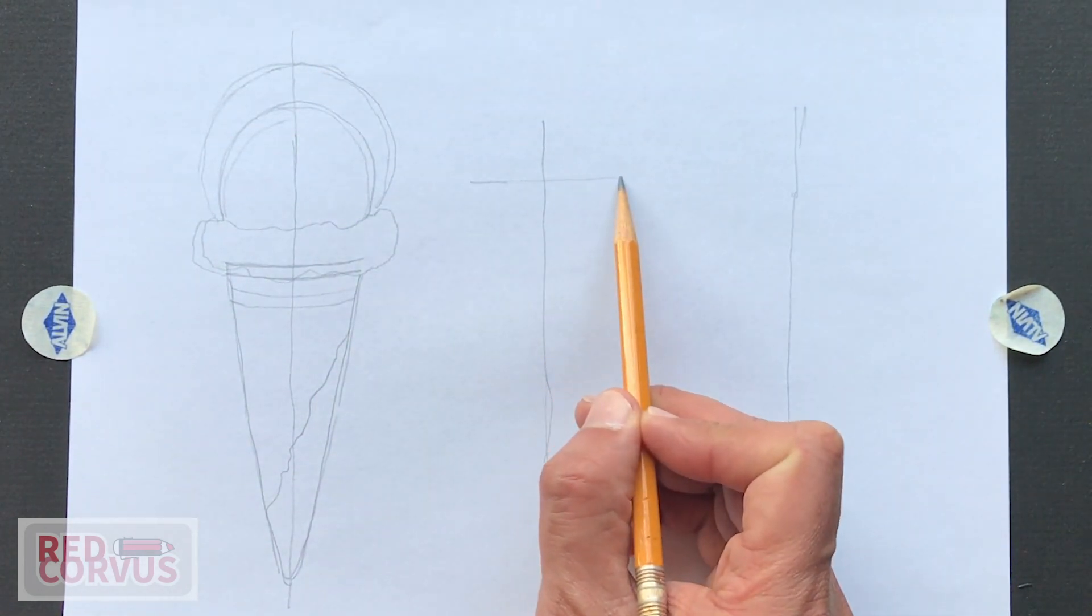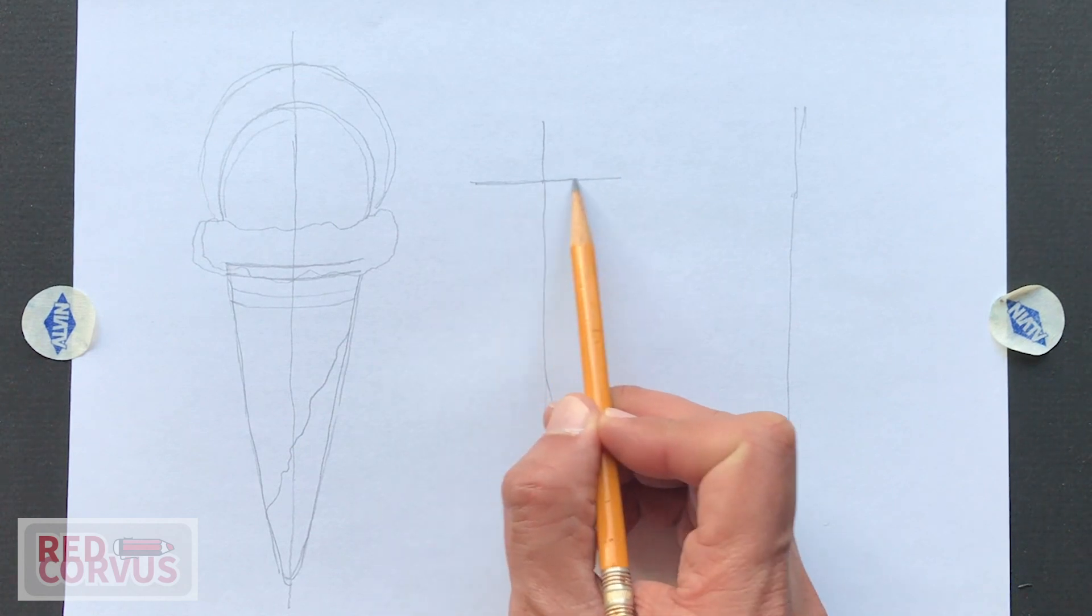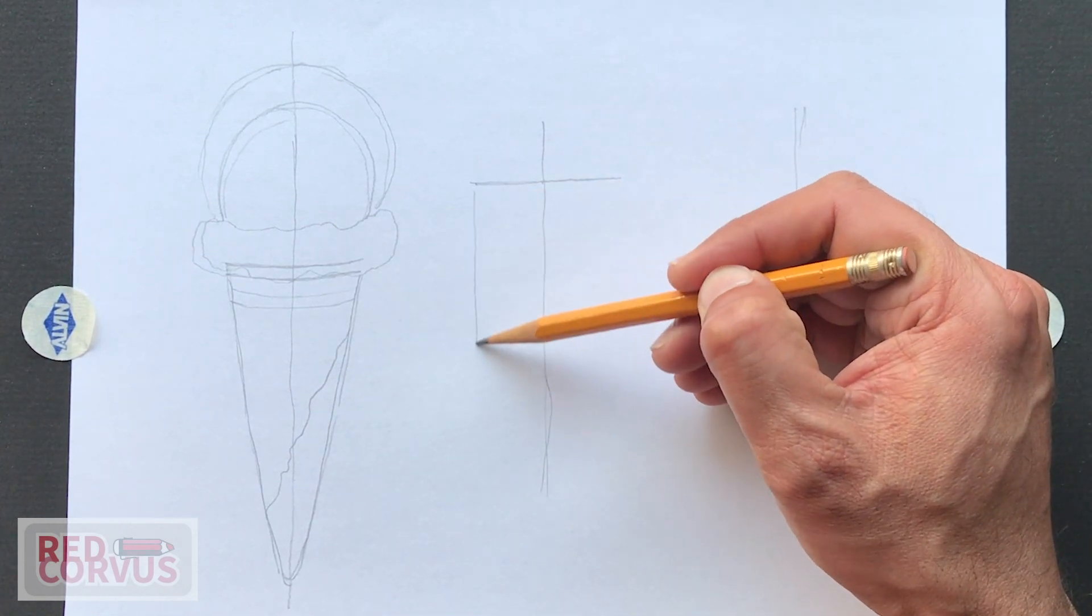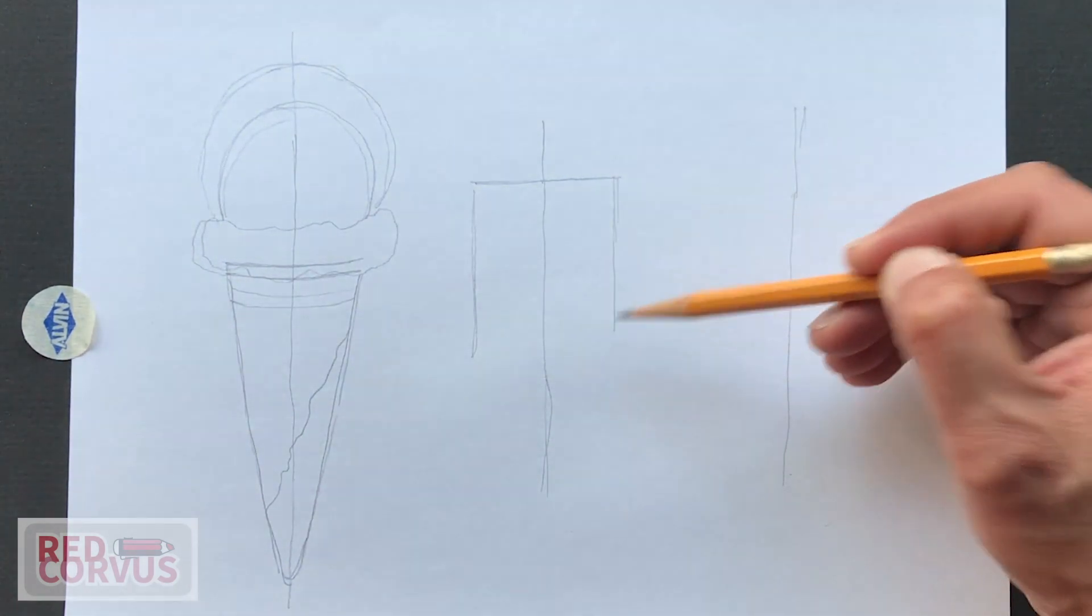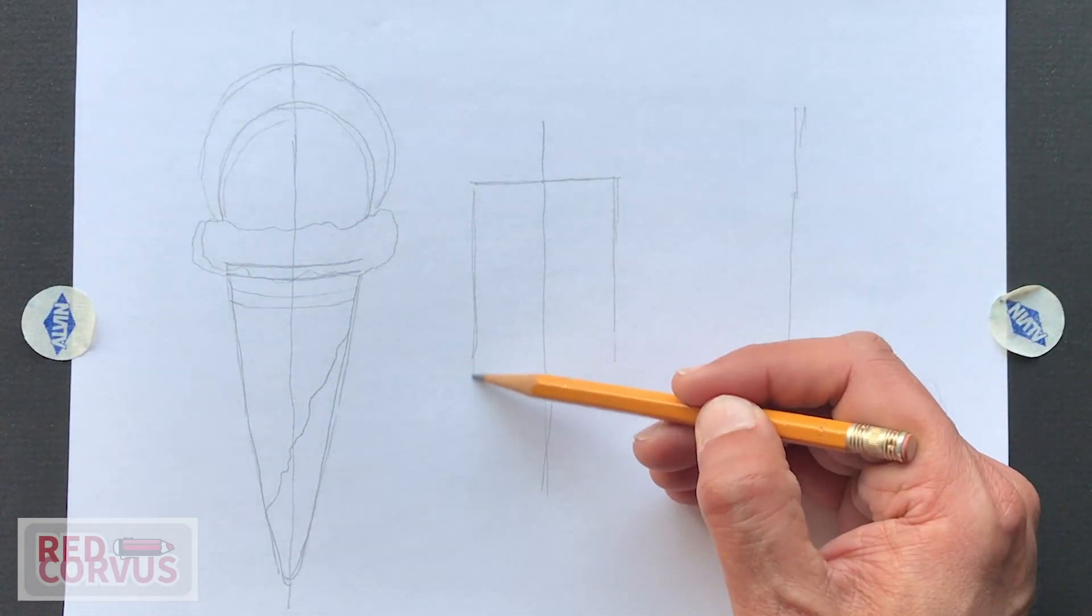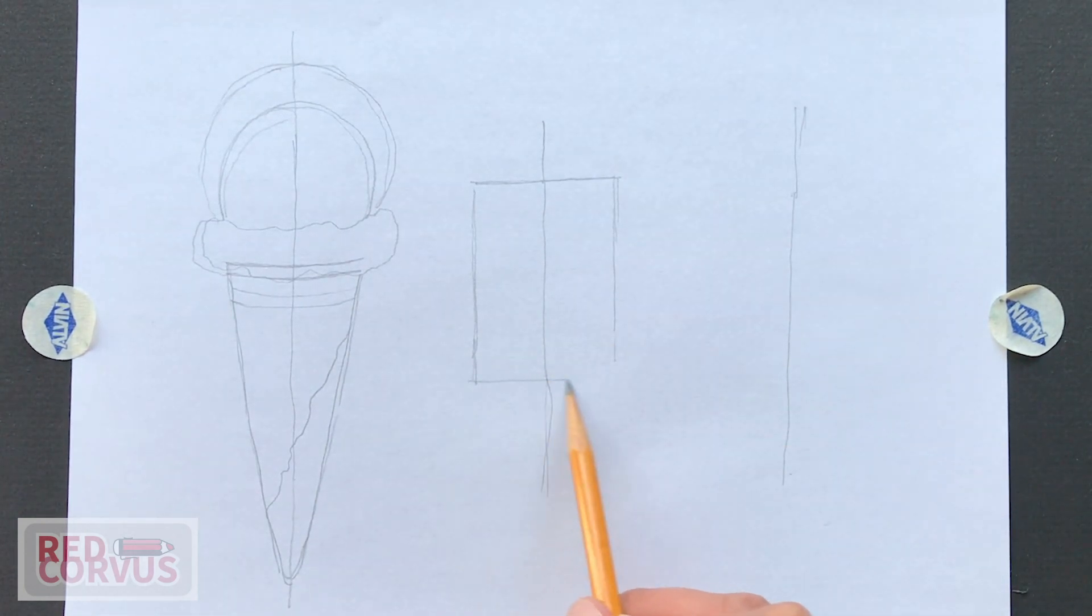Now we will draw the popsicle. And to do that, I'm going to draw a rectangle. The proportions of this can be whatever you want, because they come in many different shapes and sizes. This is the simplest design.